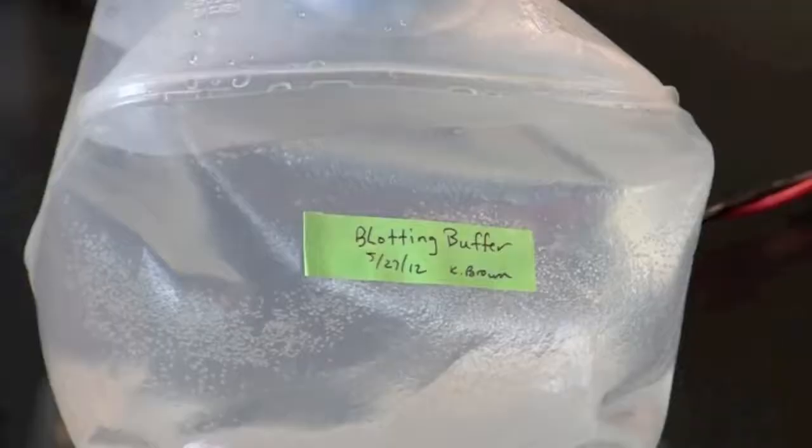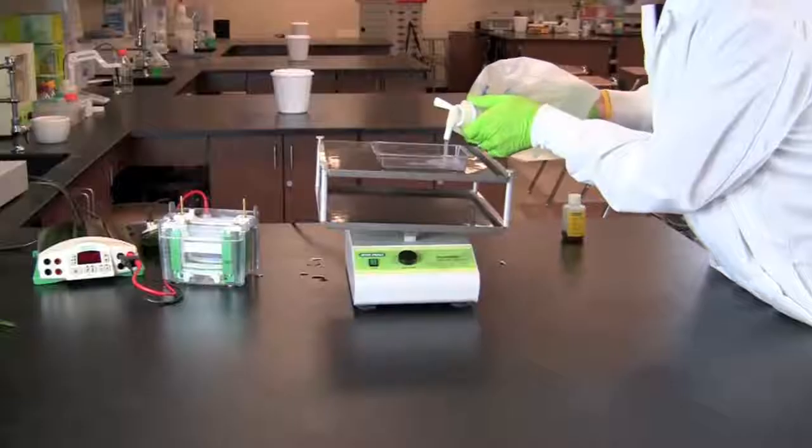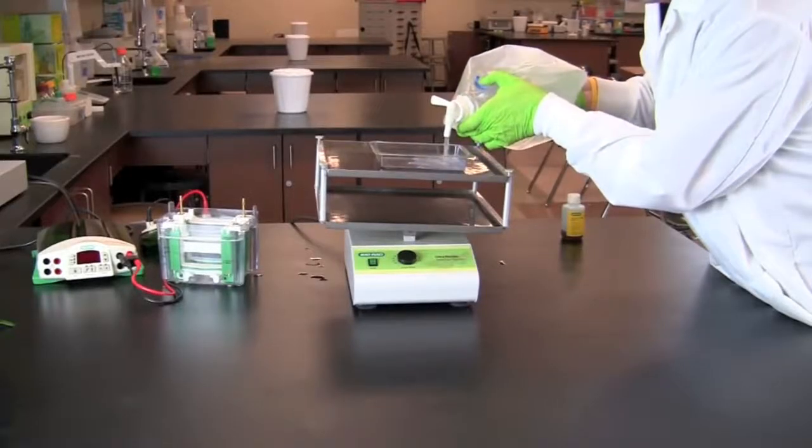First fill a tray with blotting buffer. You will be using this buffer to equilibrate your gel prior to starting the western blot.